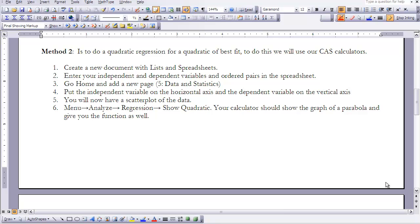First thing you want to do is create a new document with lists and spreadsheets. I'm just going to go through the steps here, and then I'll show you the screenshots. So create a list and spreadsheets. You're going to enter your independent and dependent variables. Then you're going to go to your home page and get a new document of data and statistics. Put the independent variables on the horizontal and the dependent on the vertical. Then you have a scatter plot, and then you can go ahead and analyze your data using quadratic regression.